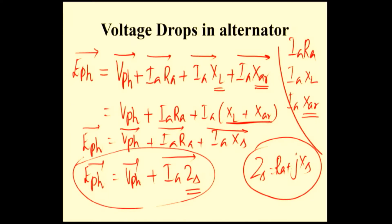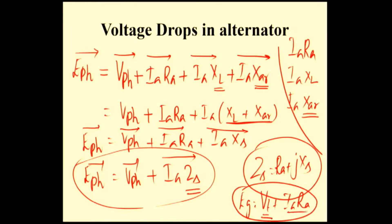You know the voltage equation of the DC generator: EG = VT + IARA. This is the voltage equation of the DC generator. EG is the EMF induced inside the DC generator, VT is the terminal voltage, and IARA is the resistive drop. In the DC generator, reactance does not come into picture, so only IARA.